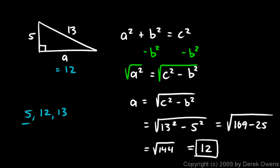5 squared plus 12 squared, it turns out, is 13 squared. So 5, 12, 13 is another fairly commonly known Pythagorean triple. This is an example.